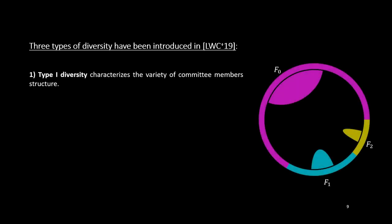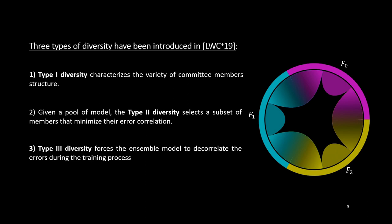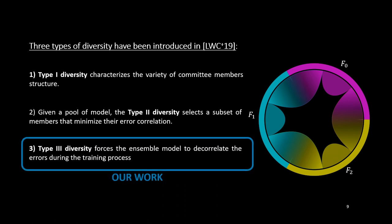We define diversity as a quantity measuring the difference in terms of predictions among the committee members. Liu et al. introduce three sources of diversity. Type 1 diversity characterizes the variety of committee member architectures in an ensemble model. Type 2 diversity selects a subset of members from a pool of networks to keep only those with a minimum amount of error correlations. Type 3 diversity induces interaction between the committee members during training, such that even if the same architecture is duplicated, the training process forces the ensemble model to decorrelate individual errors. In this work, we develop a new loss function that optimizes type 3 diversity in order to maximize the mutual information between the ensemble model and the targeted variable.